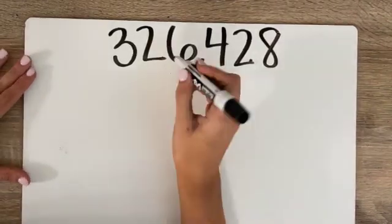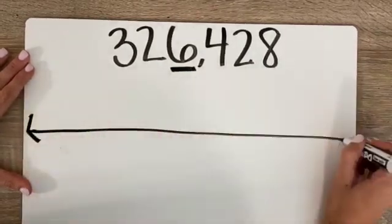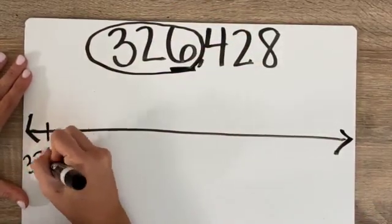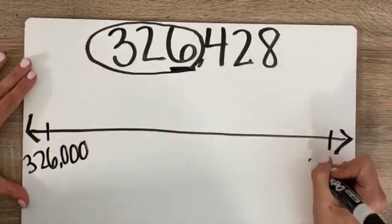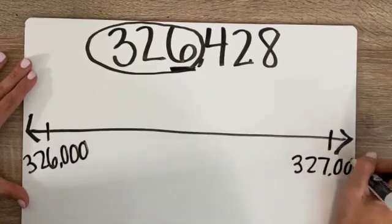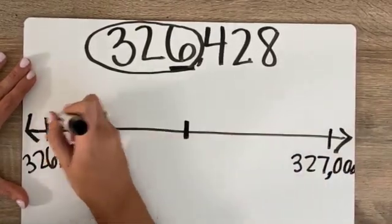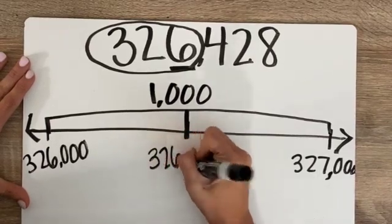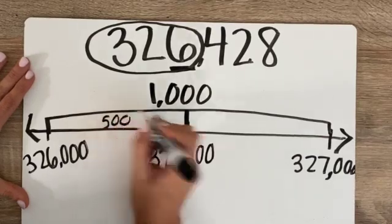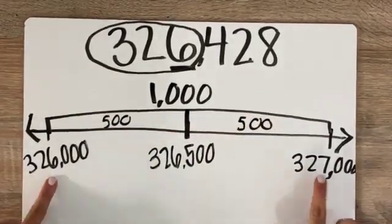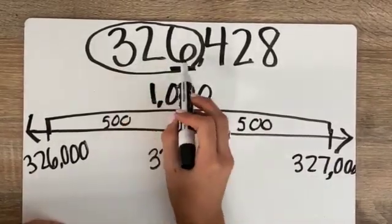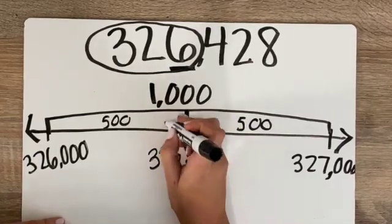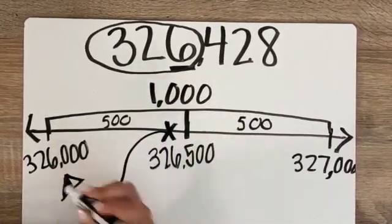326,428 — so how many thousands do I have in this number? I have 326,000. And if I had one more thousand, that would be 327,000. My halfway point is 326,500, because 500 is half of 1,000 — that's the difference between these two numbers. My number is 326,428, which is less than 326,500, so it would be right here. I would round down to 326,000.